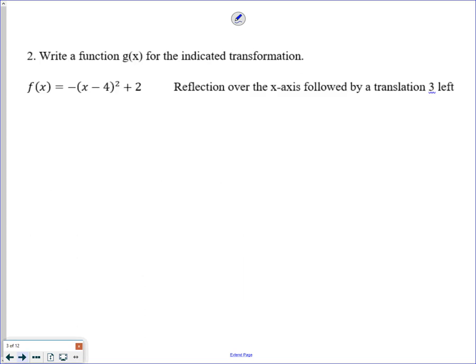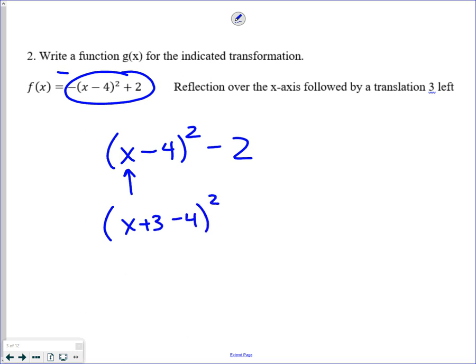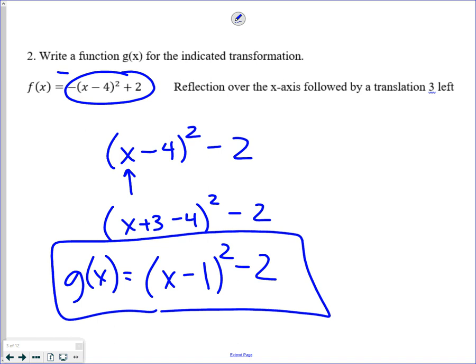Next one. Now I just want you to actually do the transformation. So reflection on the x-axis means you take this entire function, negative. So that would make a positive x minus 4 squared minus 2. Notice that I did not distribute into the parentheses being squared. And then the translation left 3 means you replace the x with x plus 3. So x minus 1, quantity squared minus 2, is the g function that they're looking for.